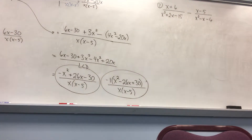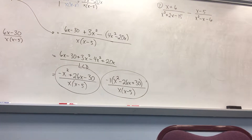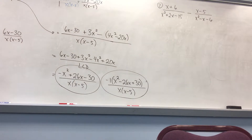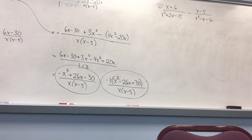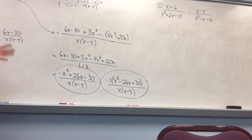You can only add and subtract things that are alike. Do we have like fractions? No, we do not. So we're going to have to bend them to our will and make them into like fractions. You could just multiply x squared plus 2x minus 15 times x squared minus x minus 6 to get a common denominator, but it might not be the least common denominator, and your life can get really miserable. So I'm going to invoke the motto for this chapter: factor first.